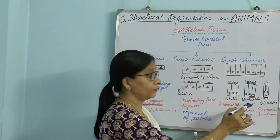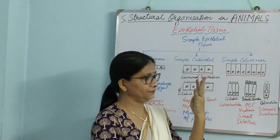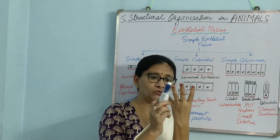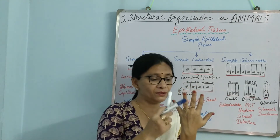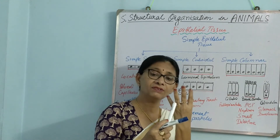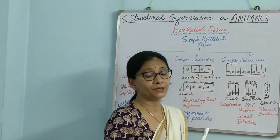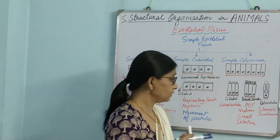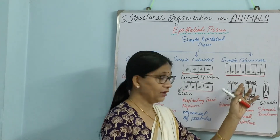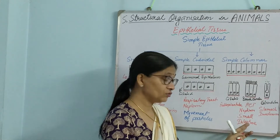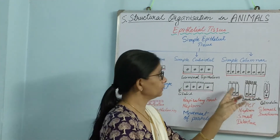Next will be brush border — very important. The free end of the cell has finger-like projections, known as the brush border. What is it basically doing? It increases the surface area of absorption. So all those places where absorption is done will have brush border simple columnar epithelium. These places are the proximal convoluted tubules (PCT), where absorption of minerals is done, and the small intestine — the villi are nothing but brush border epithelium.